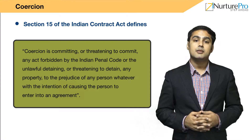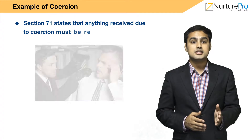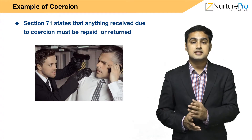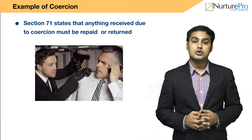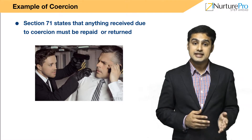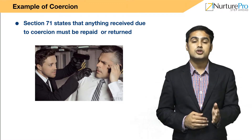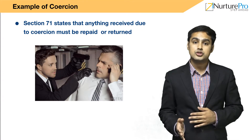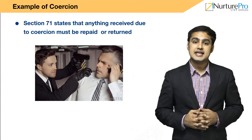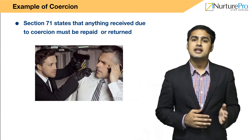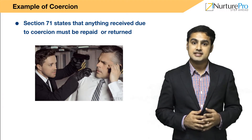For example, assume Ram threatens to kill Anand's son if Anand refuses to sell his house to him at a throwaway price. Such a sale would be regarded as void at the option of Anand, as he was forced to perform the deed. Section 71 states that anything received due to coercion must be repaid or returned.